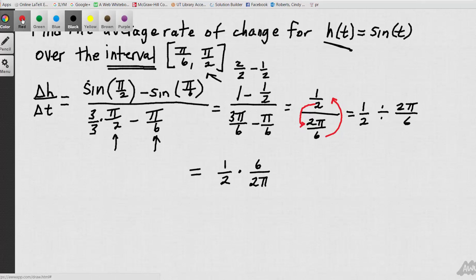And as I can see, the 2 will cancel into the 6 three times. And that gives me my final answer of 3 over 2 pi.